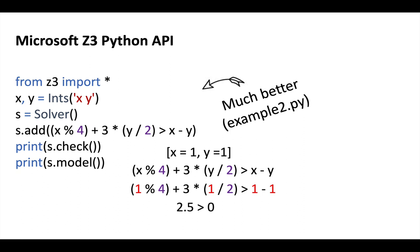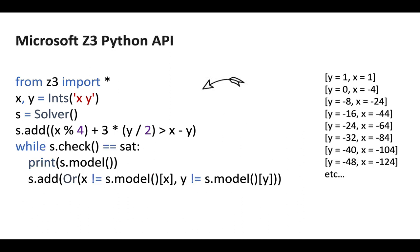We can have Z3 give us more satisfiable conditions, but we have to add constraints saying we no longer want X to equal 1 and Y to equal 1, then resolve. We can continue doing this until we've exhausted all of our space and return unsat. We do this using while s.check equals equals sat — print the model and then add constraints using an OR clause saying X is not going to equal whatever came back as X in the model, and Y similarly. This continues producing outputs until it exhausts all of them.